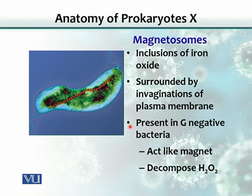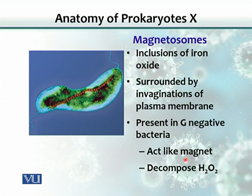Another inclusion body is magnetosomes. These are iron oxide deposits surrounded by plasma membrane invaginations and are present only in gram-negative bacteria. They serve two purposes: they can act like a magnet so the bacteria can attach themselves to rocks or surfaces that have higher iron content, and these bacteria are also able to decompose hydrogen peroxide.